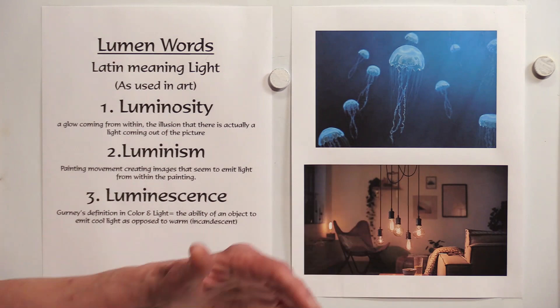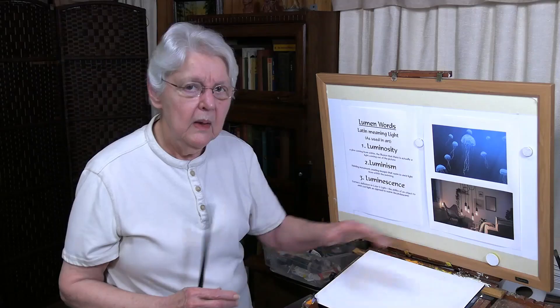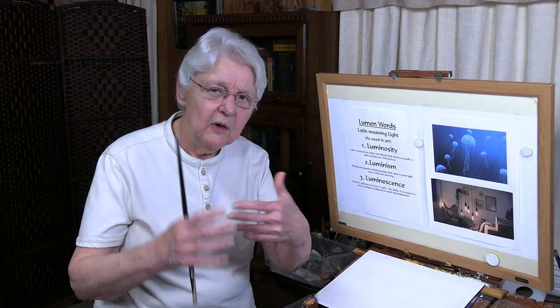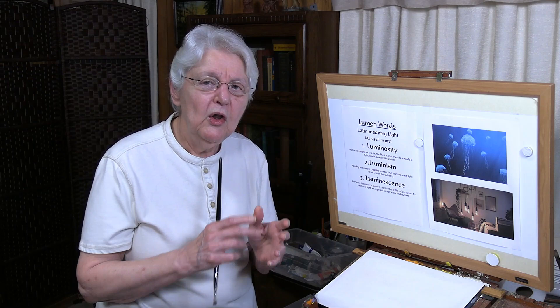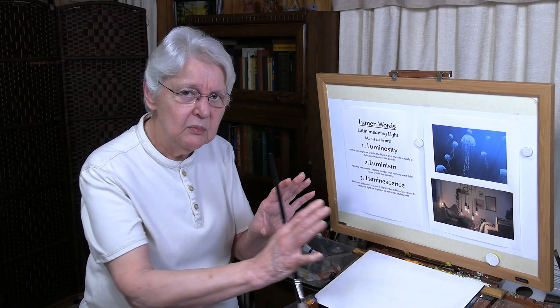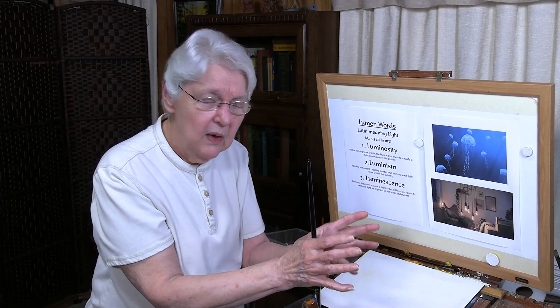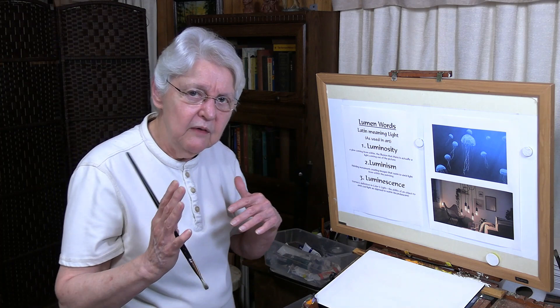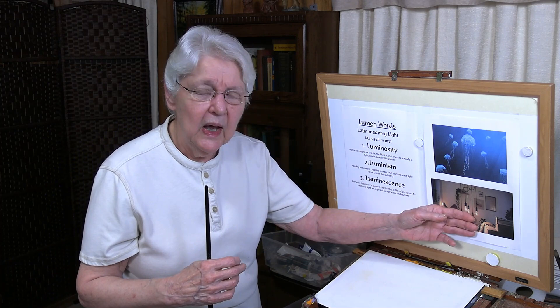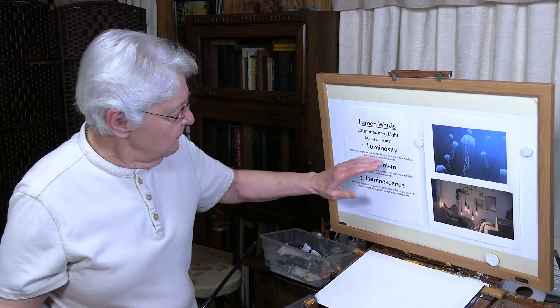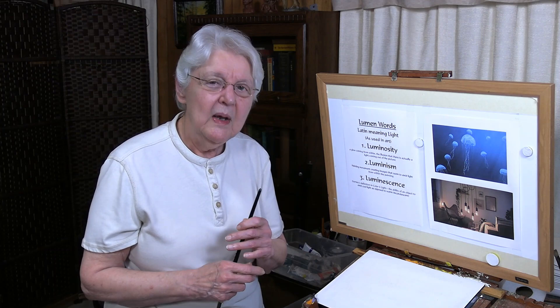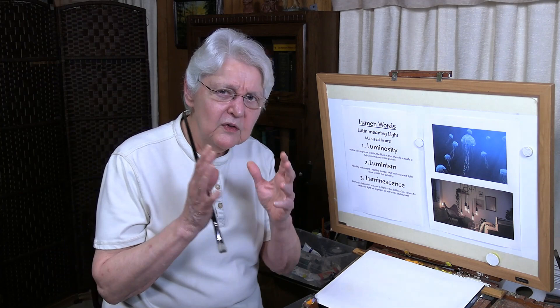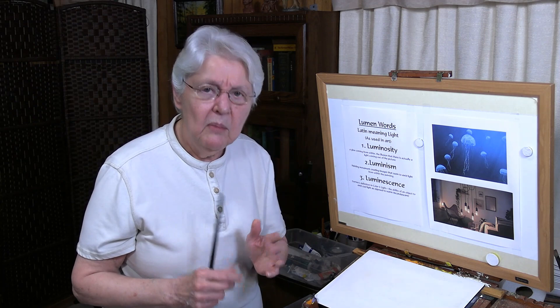So when you're doing paintings, if you want to show luminescence, you want to show your light as a cool light. The images in the light source or reflecting light are more cool — they might be emitting cool light into a warmer environment. But if you're showing a warmer light being emitted, it's more incandescent. You notice that all those words begin exactly alike: lumen. But in the field of art, we fail to see distinctions between words that may have very similar spelling and be built on the same Latin derivation, but have totally different meanings.